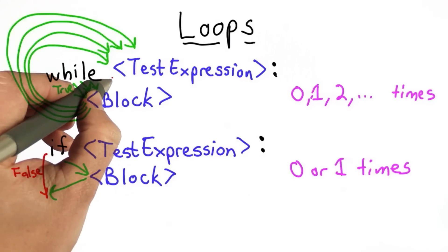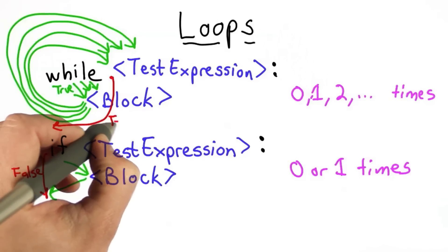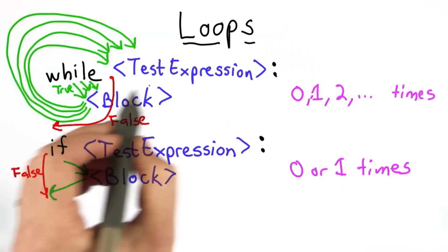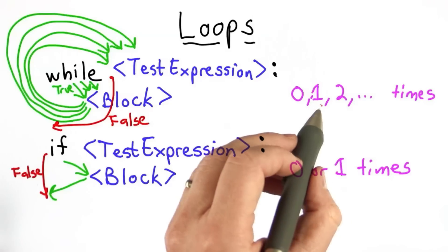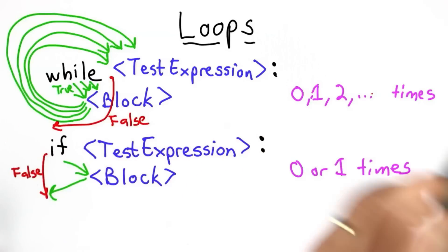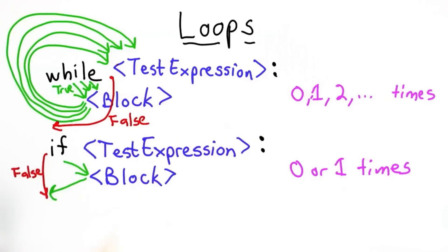At some point, maybe the test expression is false. Once the test expression is false, we go to the next instruction. So this means a while loop can execute the block either 0 times if the test expression was false at the beginning, 1 time if it was true the first time but false after that, 2 times, 3 times, any number of times. It could keep going forever. There's no requirement that guarantees the test expression eventually becomes false.